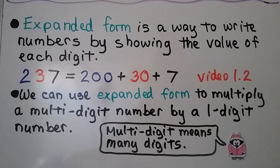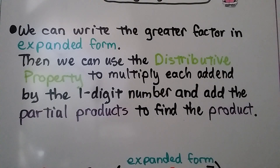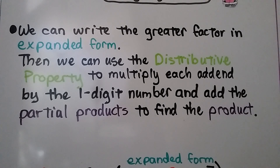We can use expanded form to multiply a multi-digit number — meaning many digits — by a one-digit number. We write the greater factor in expanded form, then use the distributive property to multiply each addend by the one-digit number and add the partial products to find the product.